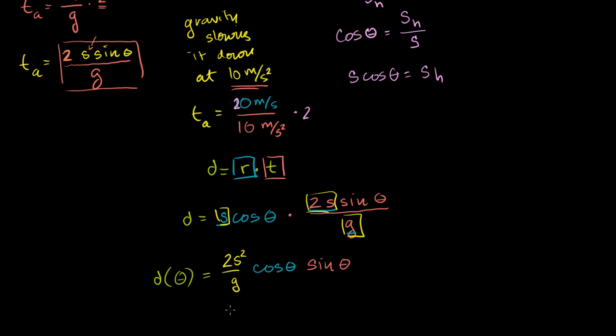So now we have a general function. You give me an angle that I'm going to shoot something off at, the magnitude of its velocity, and the acceleration of gravity, and I will tell you exactly what the horizontal distance is.